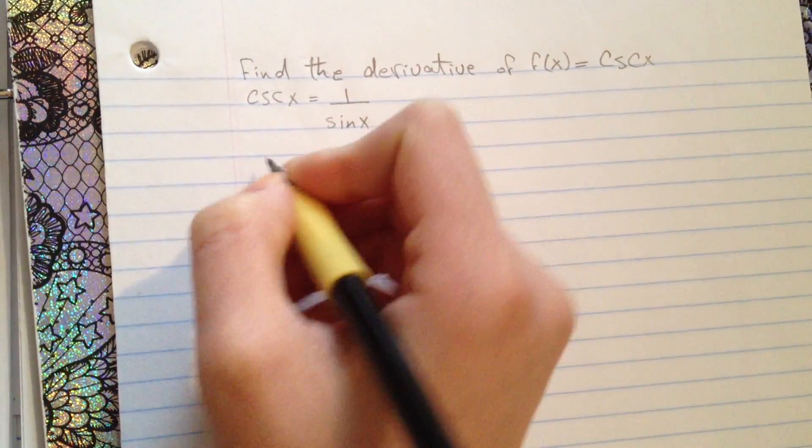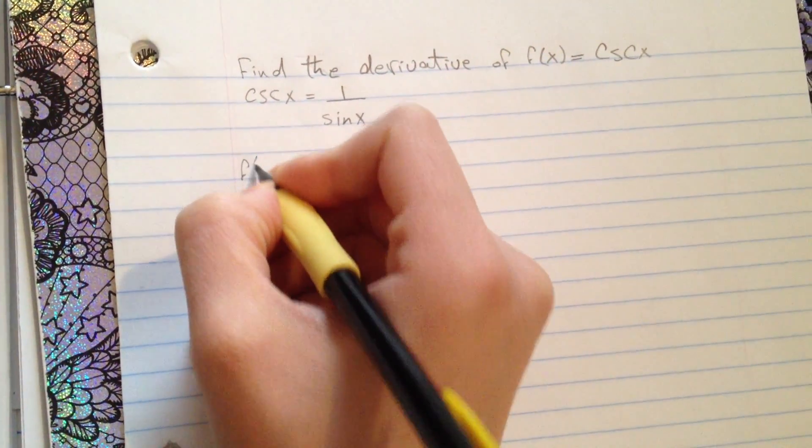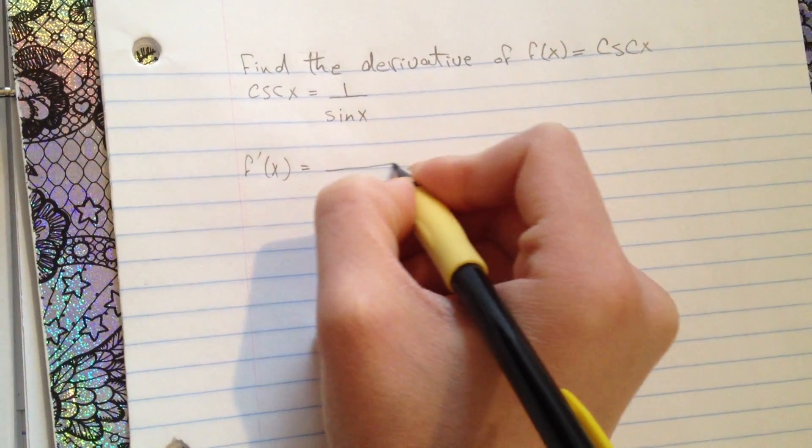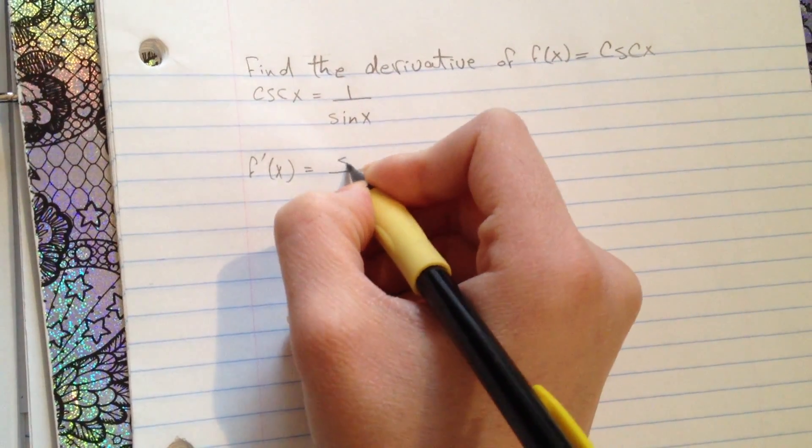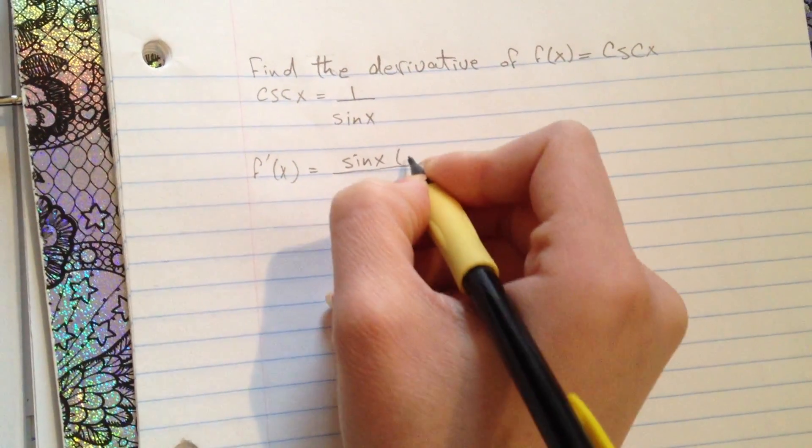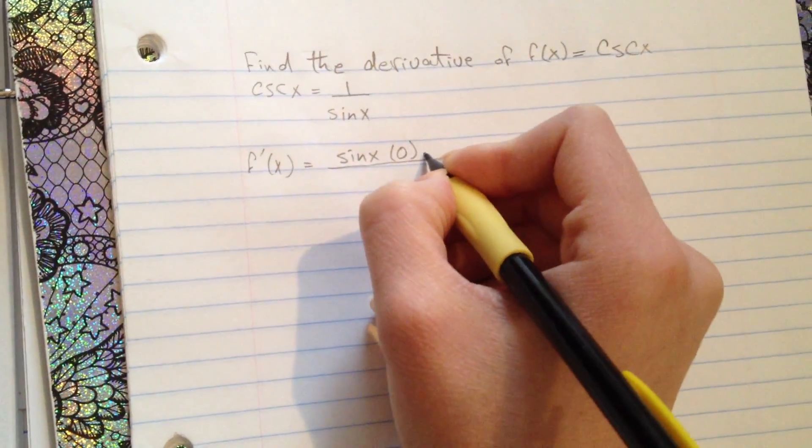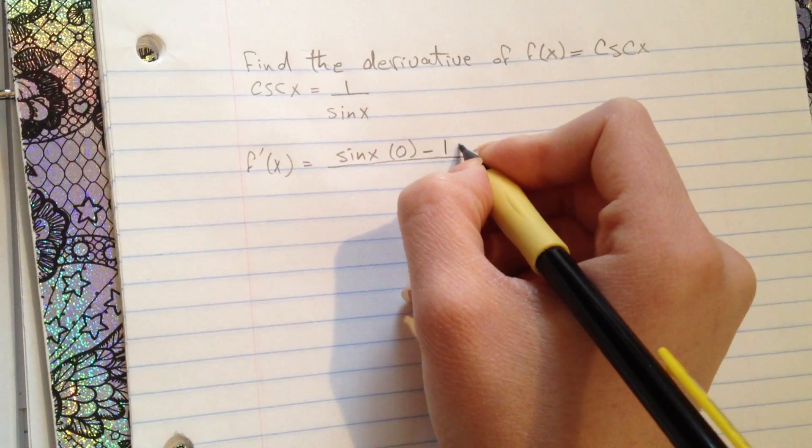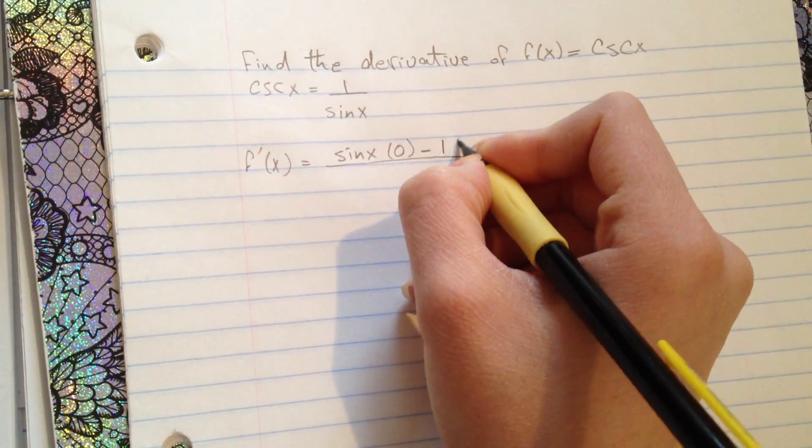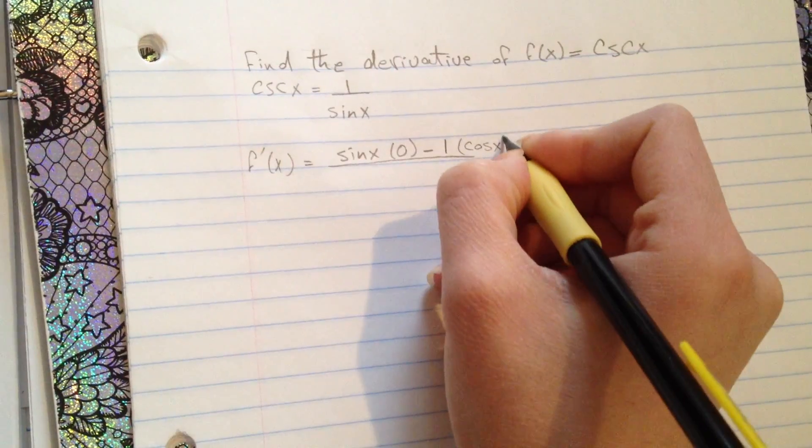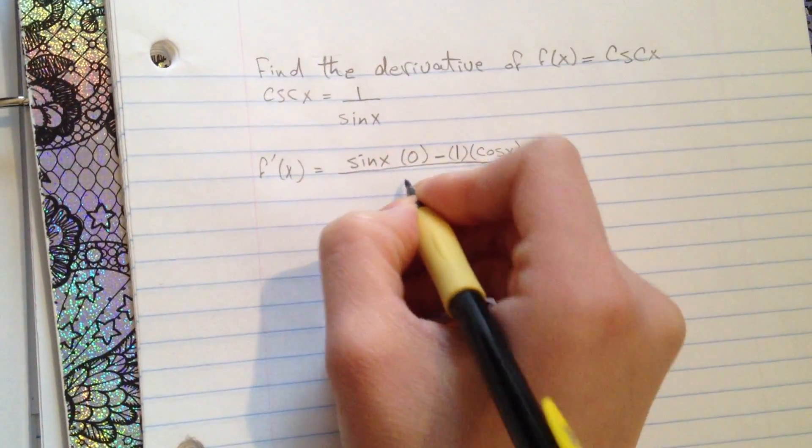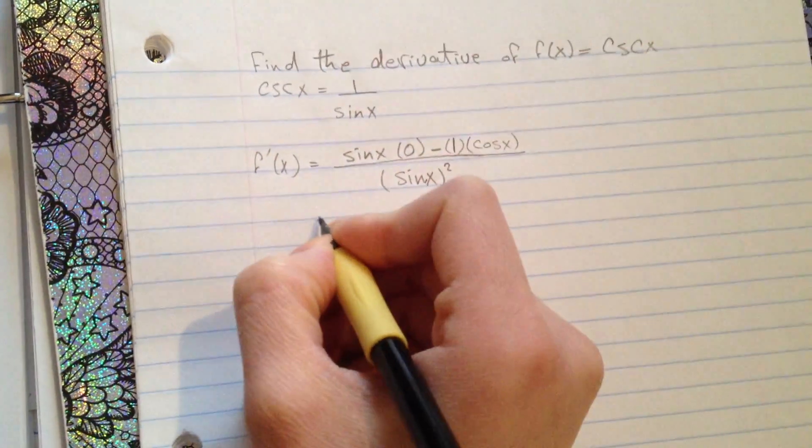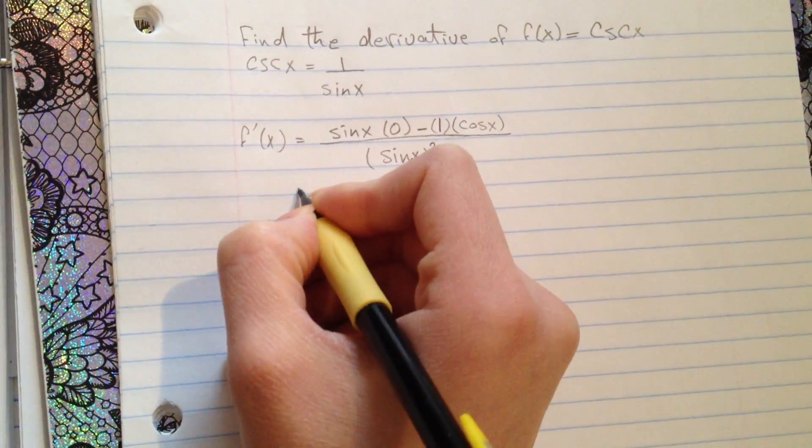So now we're going to find the derivative. We keep sin(x) and take the derivative of 1, which is 0, minus keep the 1 and take the derivative of sin, which is cosine, and square the bottom.